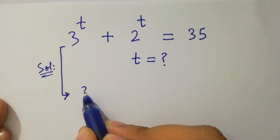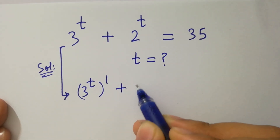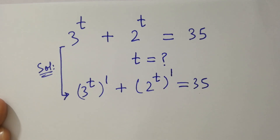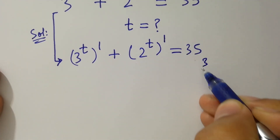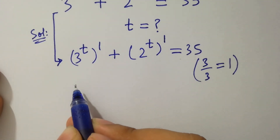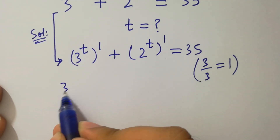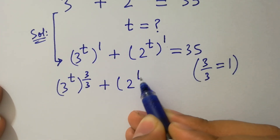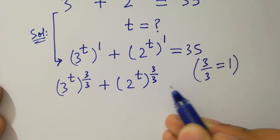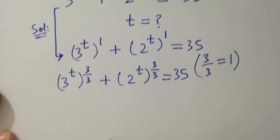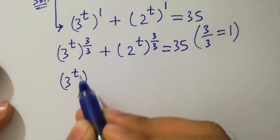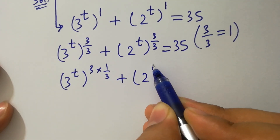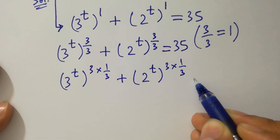It can be written as 3 to the power t, to the whole power 1, plus 2 to the power t, to the whole power 1, equal to 35. Since 3 over 3 equal to 1, we can write 3 to the power t to the whole power 3 over 3, plus 2 to the power t, where 1 is 3 over 3, equal to 35. This is the same as 3 times 1 over 3 in the exponent.